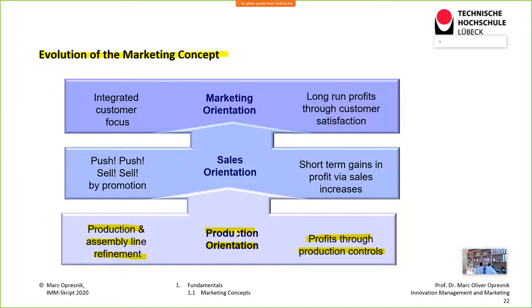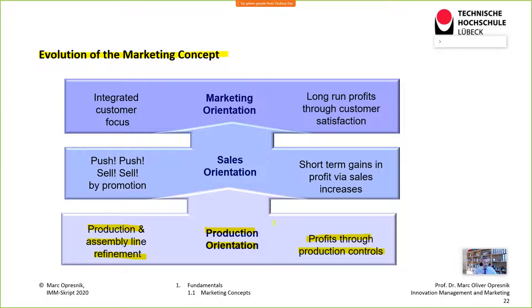That first step began with the Industrial Revolution. We talked about Henry Ford in 1908, the invention of the assembly line, and we used the example of Apple to demonstrate that the division of labor — invented by Adam Smith in his 1776 book 'Wealth of Nations' — is the backbone concept for reducing production costs substantially. That was the first step. The second step is the sales orientation.